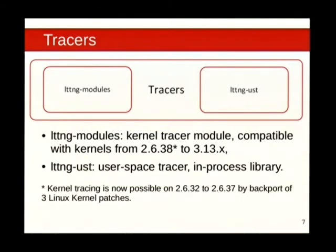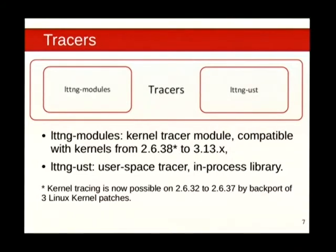There are two tracers: the LTTNG modules, which are the kernel tracer — you don't need to recompile your kernel, you use modules. The difference between Perf and LTTNG is that Perf is in-kernel and does profiling, where LTTNG doesn't. But with the kernel tracer, you can trace a lot of events in the kernel — syscalls and events in different subsystems. We also created UST, the user space tracer, which is what I'm mostly going to talk about today.